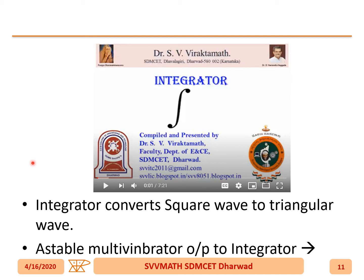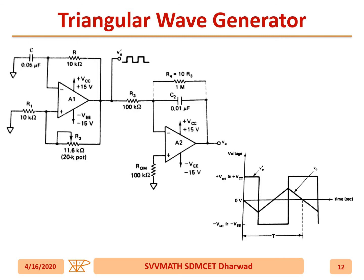As we all know, an integrator converts a square wave into a triangular waveform — a separate video is already uploaded on the YouTube channel. The astable multivibrator output, if given to the integrator — meaning we give a square wave as input to the integrator — the output will be a triangular waveform.